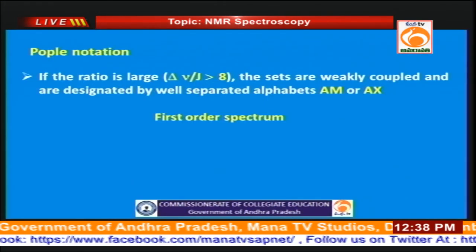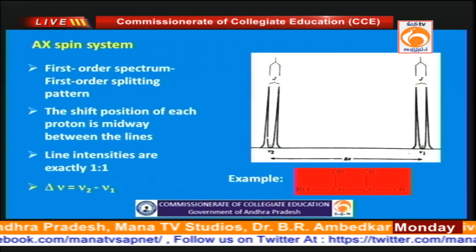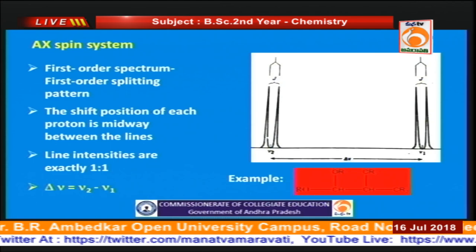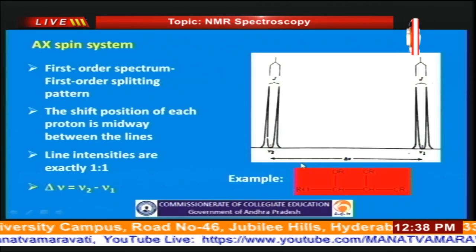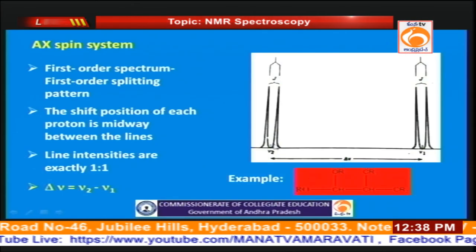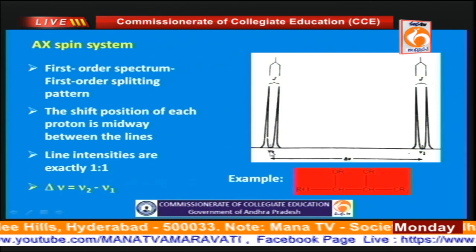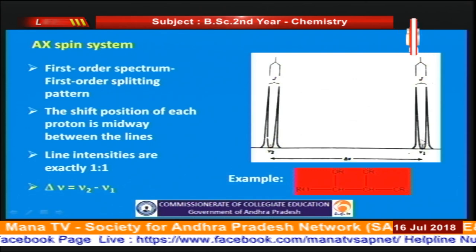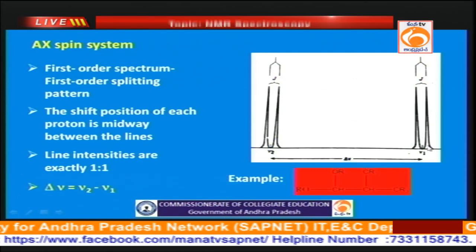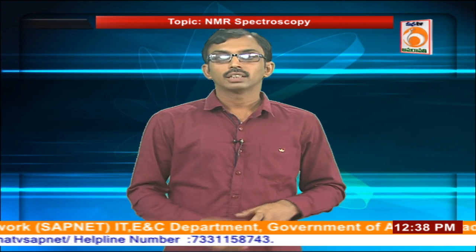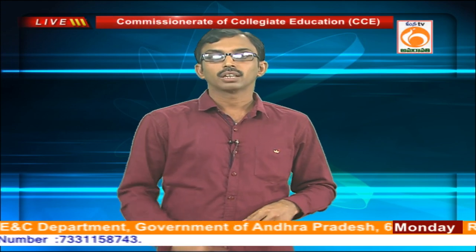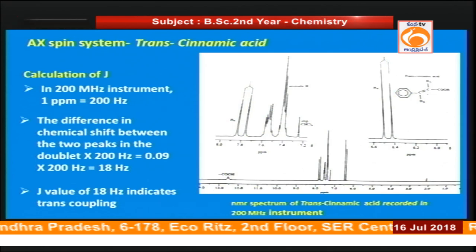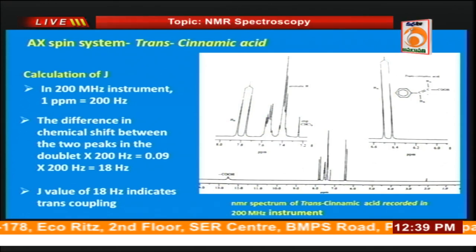If the ΔV/J value is greater than 8, we get a first-order spectrum. In the first-order spectrum, the chemical shift value can be obtained from the midpoint of the two lines. For the AX system — for example, trans-cinnamic acid — we can calculate the J value using the formula: multiply the difference in chemical shift between the two peaks by the operating frequency to get the J value in Hz.